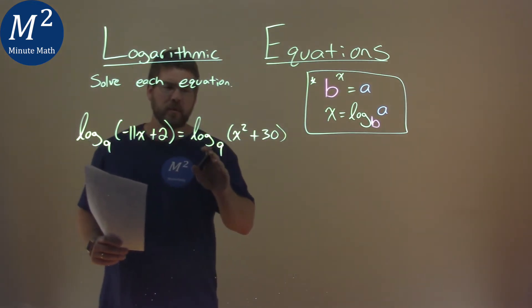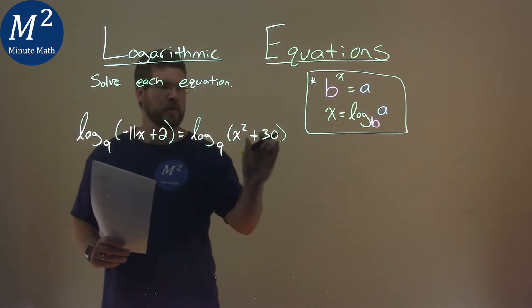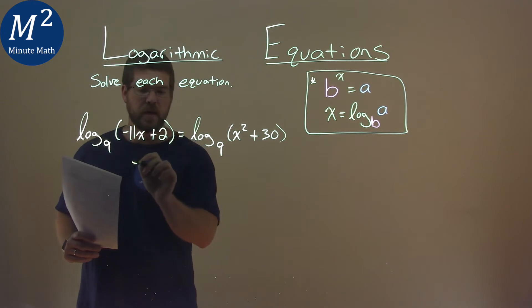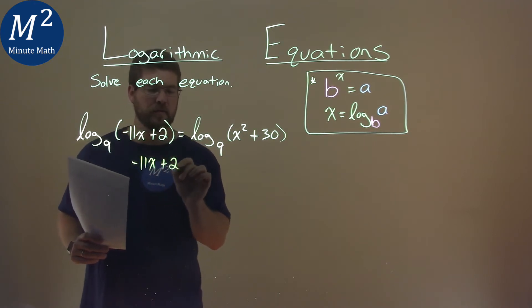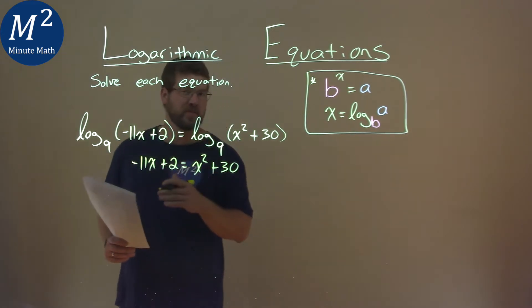Well, since these are both logs with the same base, and that's the only thing on each side, we can take the inside parts and set them equal to each other. Negative 11x plus 2 is equal to x squared plus 30, and now we're just solving for x.